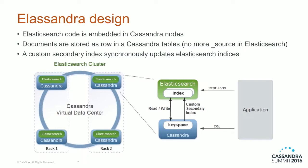We've put the Elasticsearch services inside the Cassandra JVM and documents are stored in Cassandra. When a document is stored in Cassandra, a custom secondary index automatically indexes it in the Elasticsearch layer. We kept the JSON REST API from Elasticsearch and the CQL API from Cassandra, so on each node you can request using both APIs.